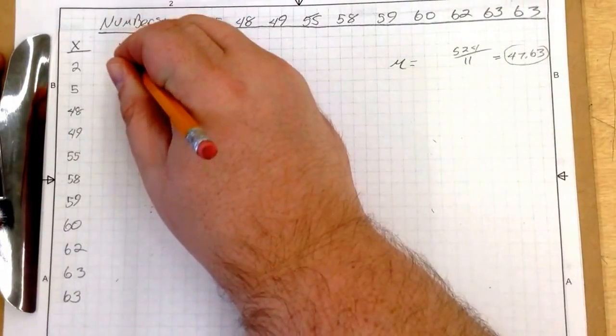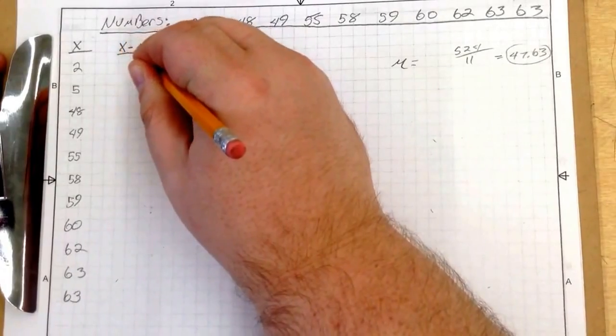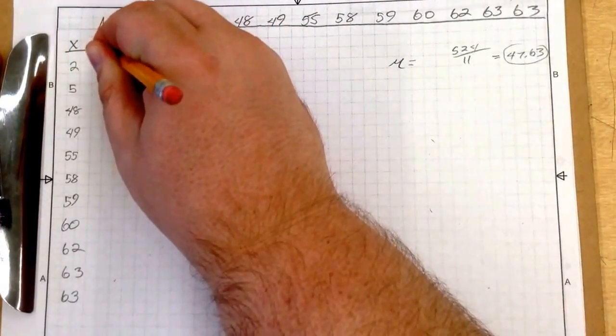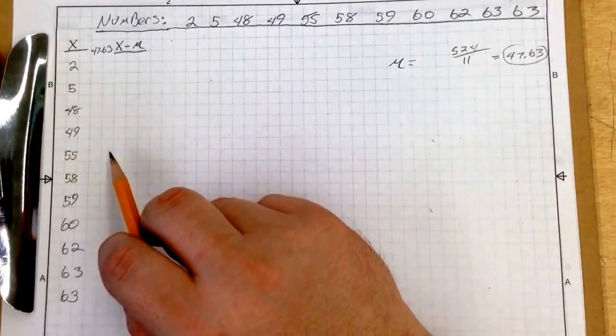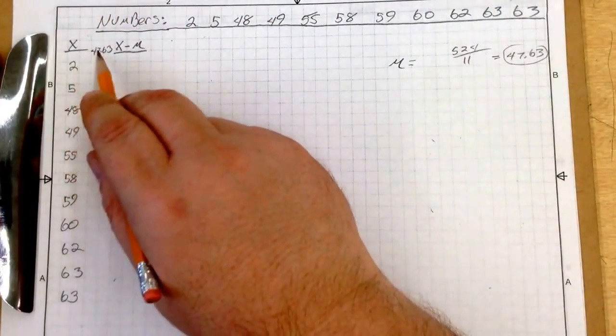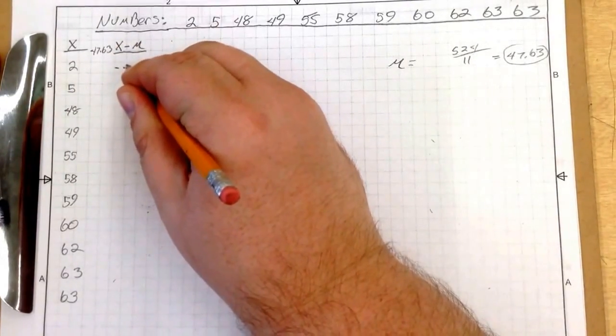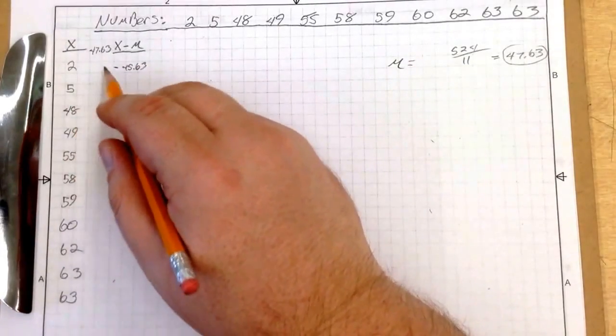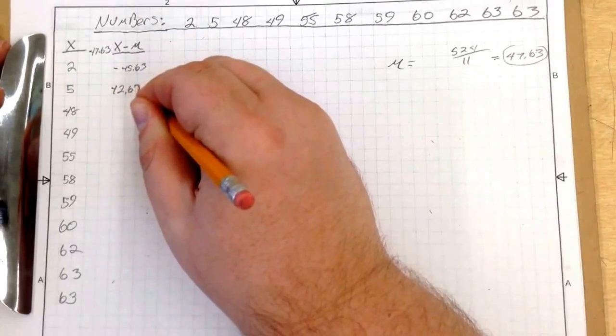Got my x right there. Now right here, I'm going to put x minus the mean. My mean is 47.63. So I have to subtract the mean from every single one. So 2 minus 47.63 equals minus 45.63.